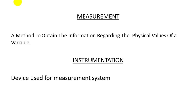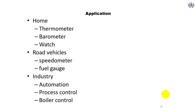Are measurement and instrumentation related or different from each other? A method to obtain information regarding the physical values of a variable is known as measurement. Instrumentation is a device or group of devices used for the measurement system — for measuring these values.